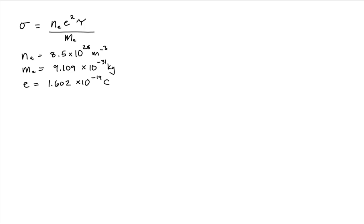Conductivity also depends on the mean time between collisions of our charge carriers, and that's what we are trying to find for this problem. Rearranging this expression, the mean time of collisions is equal to the ratio of the product of the conductivity times the mass of a charge carrier, over the number density of the conduction electrons times the magnitude of the charge squared. So this is a simple plug-and-chug type of problem.